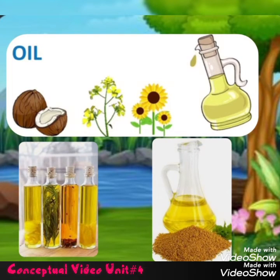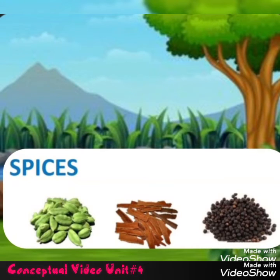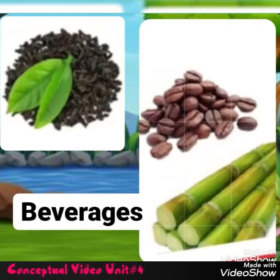Seeds of plants like coconut, mustard, and sunflower are used for cooking oil. We get spices from plants like cardamom, black pepper, and cinnamon, which add flavor to our food. We get tea from the tea plant and coffee from the seeds of coffee plants. We get sugar from the juice of sugarcane.